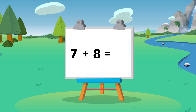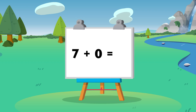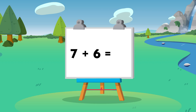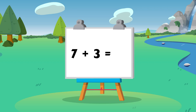Seven plus eight equals 15. Seven plus zero equals seven. Seven plus nine equals 16. Seven plus six equals 13. Seven plus three equals 10.